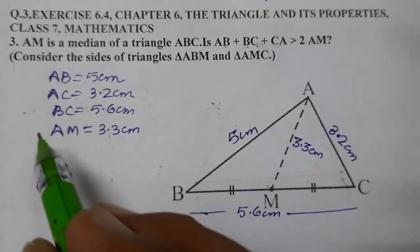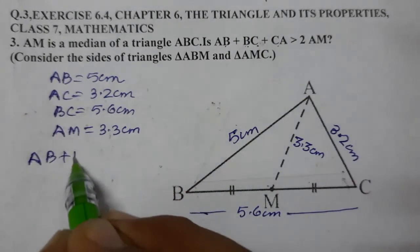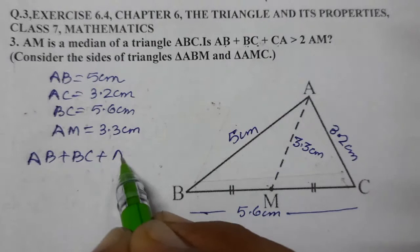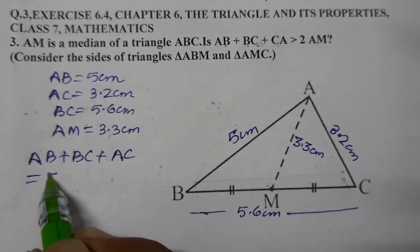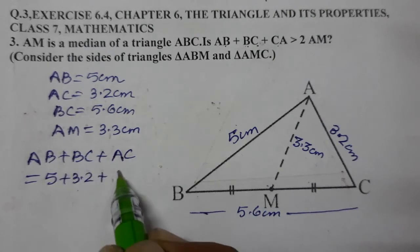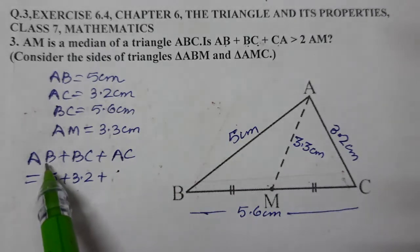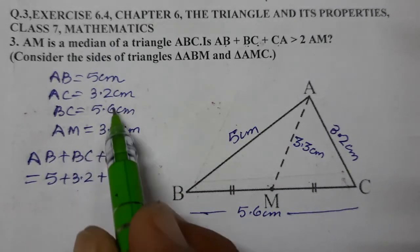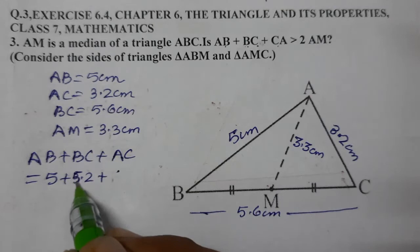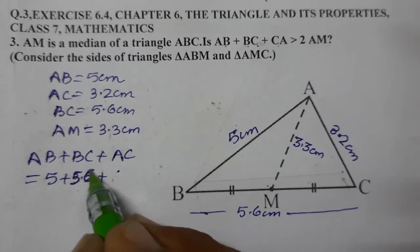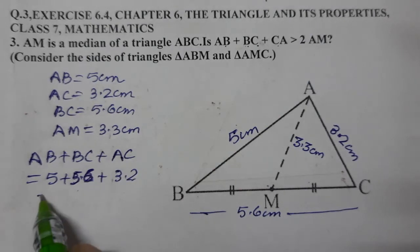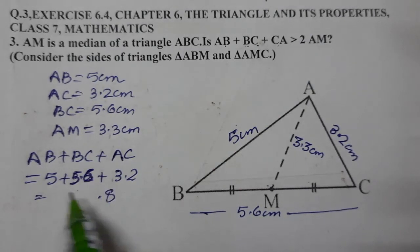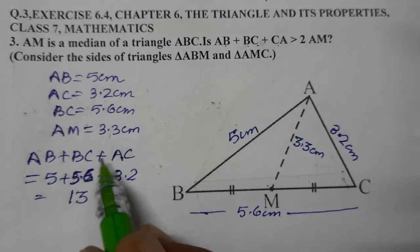AB plus BC plus AC. Let us add: AB is 5, BC is 5.6, AC is 3.2. So we write 5 plus 5.6 plus 3.2. Let us add all the three. 6 plus 2 is 8, 5 plus 5 is 10, 10 plus 3 is 13. So 13.8 is the sum of these three.